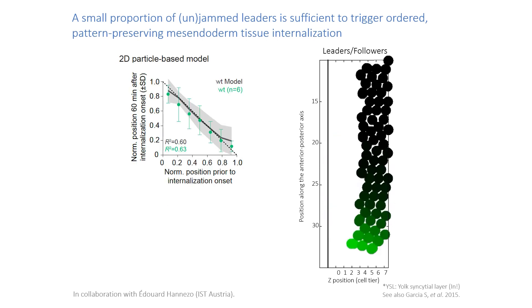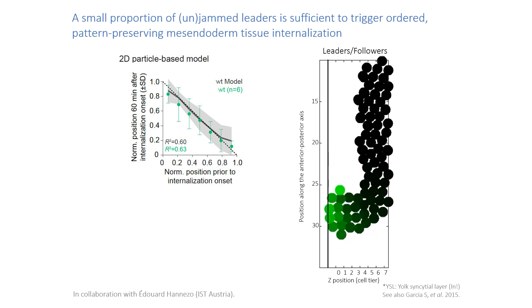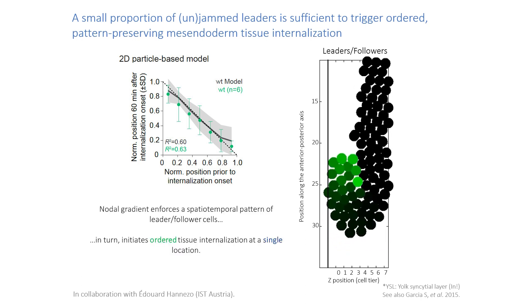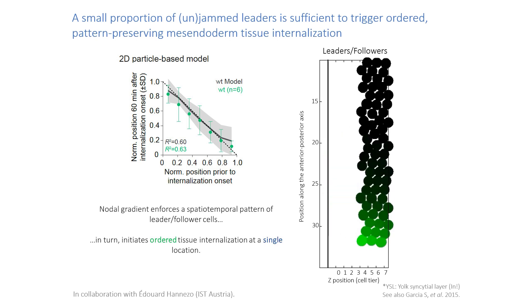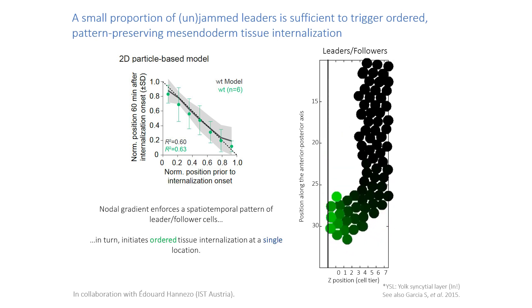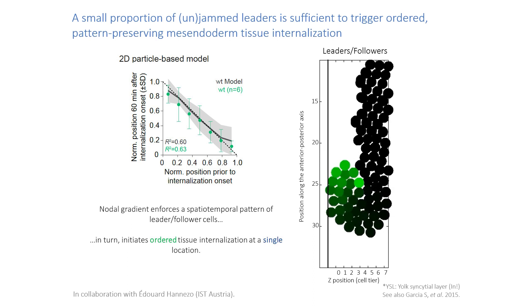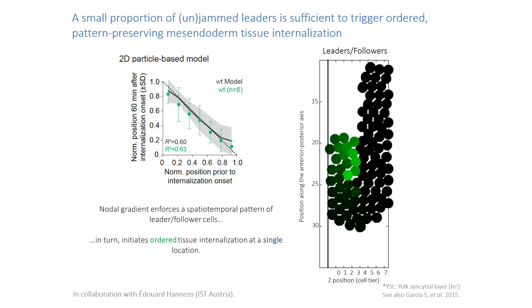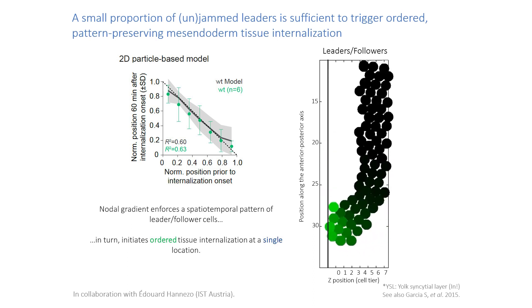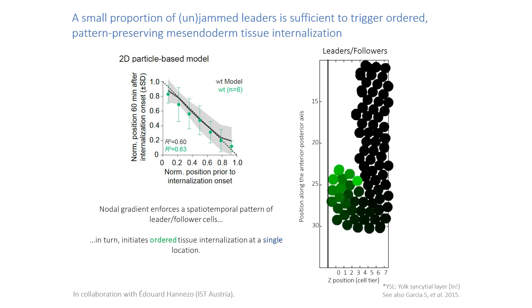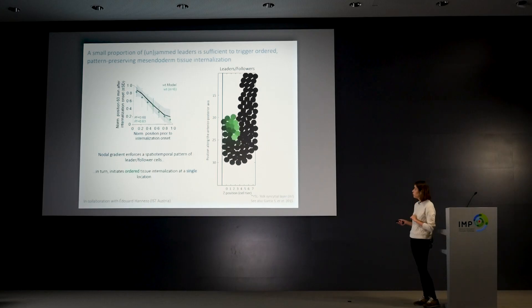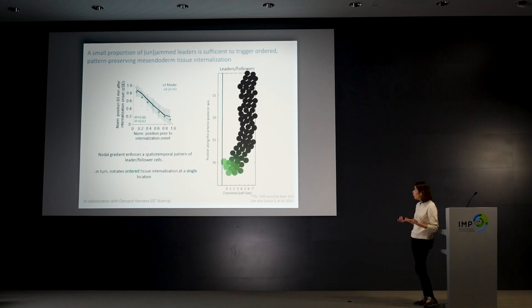This is consistent with the idea that the gradient of nodal signaling enforces a spatiotemporal pattern of leader and follower cells. This is very important because only the leader cells that can unjam can initiate tissue movements, so you always start internalizing where your leader cells are positioned. The model seems to represent what we see in vivo, but can we make any predictions that we can test experimentally?